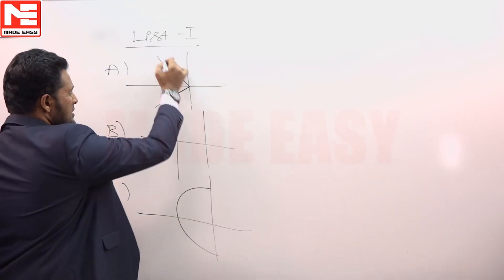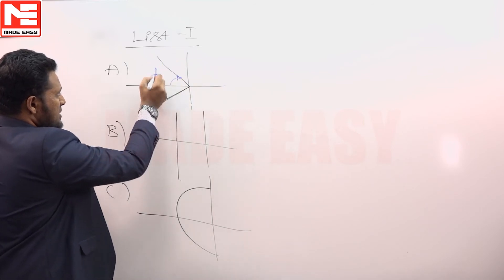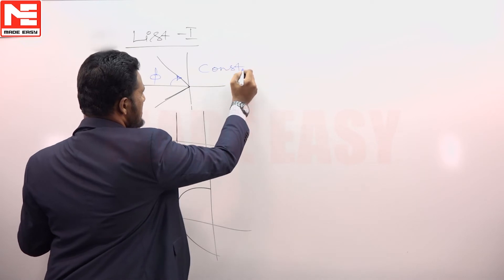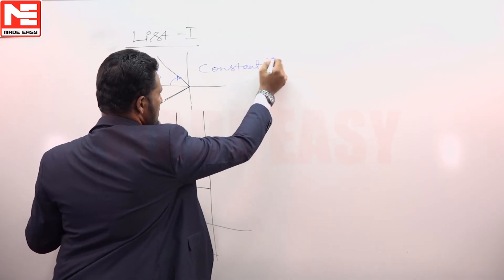Along this locus, phi is constant, zeta is cos phi. So this is constant zeta locus.